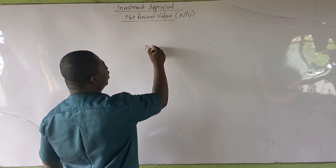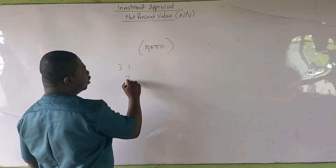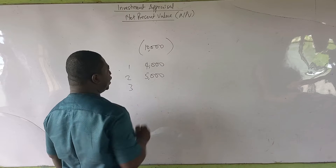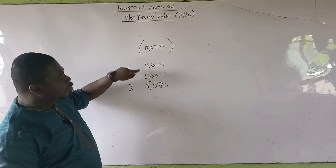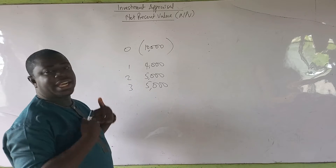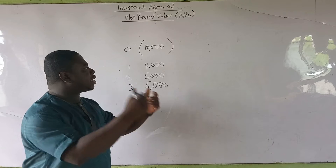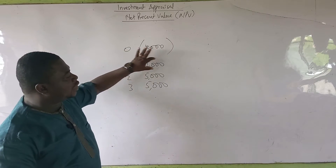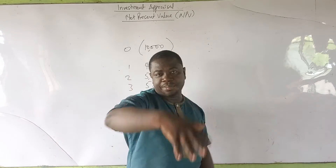So if I invest 10,000 Ghana cedis into a project — that's an outflow — and I have three years: year one, two, and three. If in year one I'm getting a cash inflow of 4,000, year two a cash inflow of 5,000, and year three a cash inflow of 5,000, then I'm getting a total cash inflow of 14,000 — 4 plus 5 plus 5. Comparing that to the 10,000 initial investment in year zero, I can say I'm getting more than what I invested. Taking 10,000 out of 14,000 gives me a net positive cash flow of 4,000. That is the basis on which you take the decision.